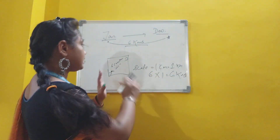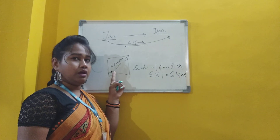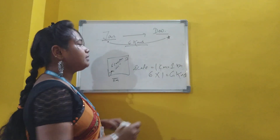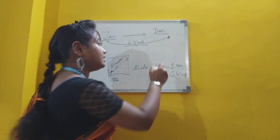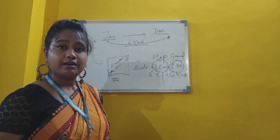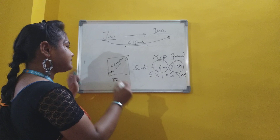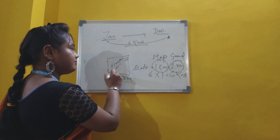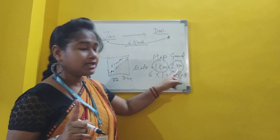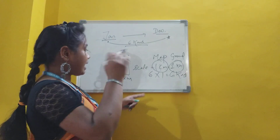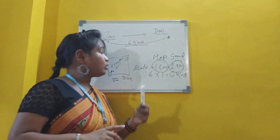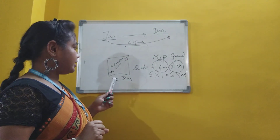Suppose the scale of a map says 1 cm equals 1 km. This means a distance of 1 cm between two points on the map corresponds to a distance of 1 km in actual between the same two places on the ground. So if on the map two places are 3 cm apart, the ground distance is 3 × 1 = 3 km.